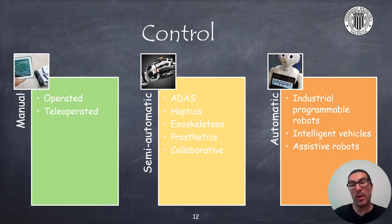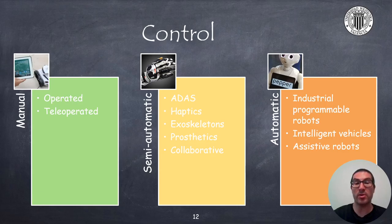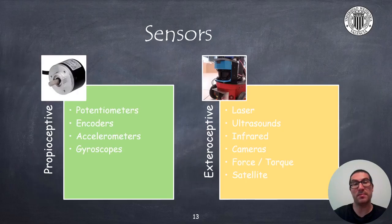The vast majority of robots are operated in automatic mode, such as is the case of most industrial robots, intelligent vehicles, assistive robots, and many others.